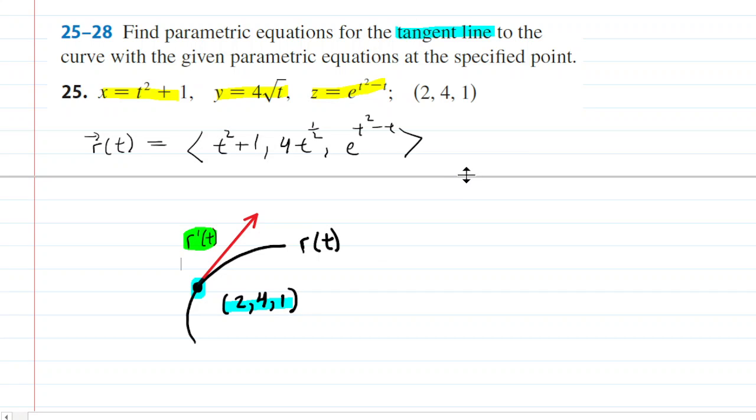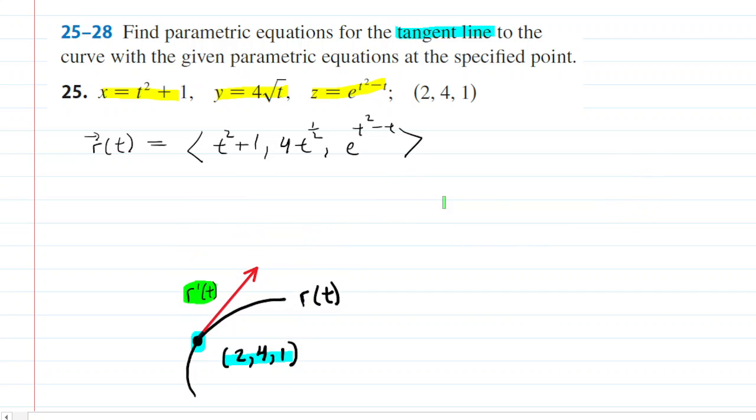In other words, we're going to need r prime of t. So we'll make a little space here, and we're going to compute the derivative of our vector function. And to do that, you just take the derivative of the individual components. So we have t squared plus 1 for the x component. The derivative of that function, of course, is 2t. Here, we're going to continue using a power rule, multiply 1 half by 4, and then subtract 1 from the power.